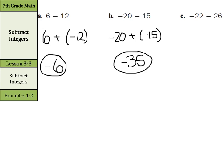Negative 22 minus 26: that's the same as keeping negative 22, changing subtraction to addition, and the opposite of 26 is negative 26. Same signs, so 22 plus 26 is 48, and keep it negative: negative 48.